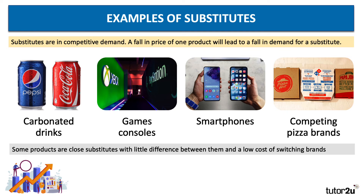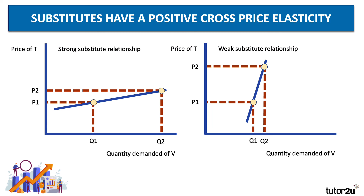Good examples of substitutes are shown here in the diagram. The examples here are carbonated drinks, games consoles, smartphones, and different brands of pizza. Substitutes are in competitive demand — a fall in the price of one product will lead to a fall in demand for a substitute. Some products have a high positive cross price elasticity; they are close substitutes with low brand loyalty and very low costs of switching. In our left-hand diagram, we have a strong substitute relationship: if the price of good T goes up, we see a big rise in the quantity demanded of good V, a rival brand. However, on the right-hand side, if the price of good T rises from P1 to P2, there's only a small increase in the quantity demanded of V, suggesting the two products have a weak substitute relationship.